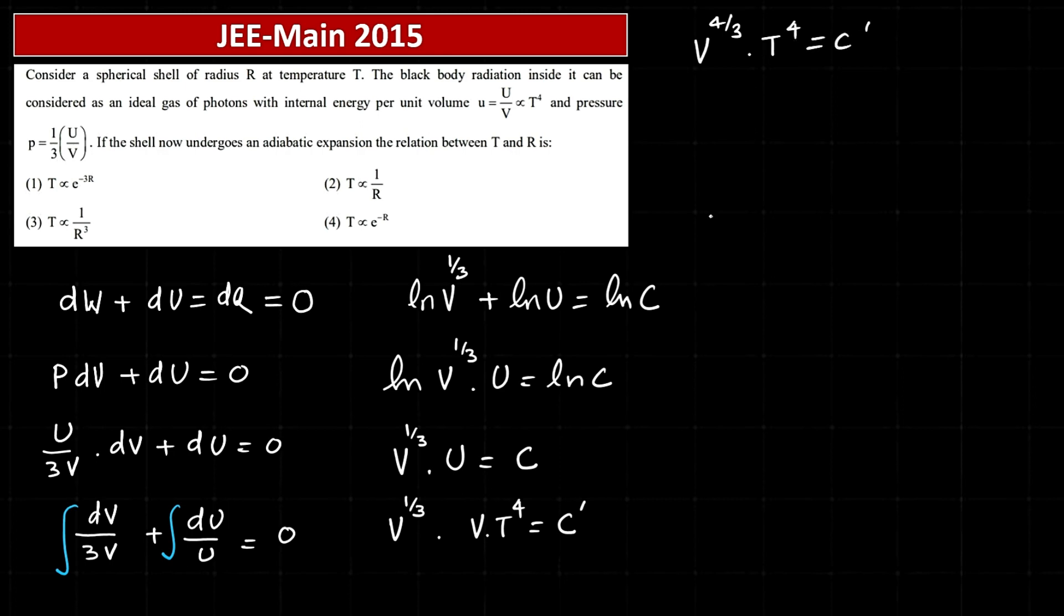Take the fourth root of both sides. That will be V to the power 1 by 3 times T equals another constant, C double dash.